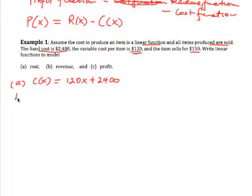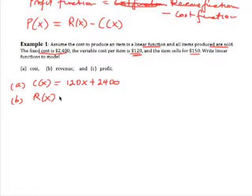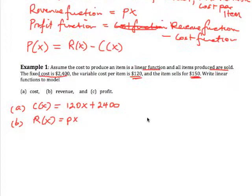Now let's talk about the revenue function. R(x) is going to be the price per item, and the price it's selling for is $150, so it's $150x.